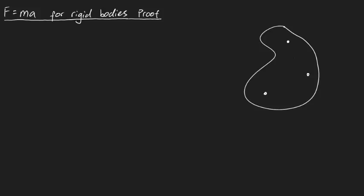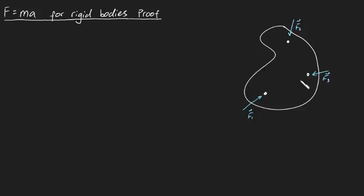Now I'm going to say that there are a couple of different forces acting on these particles. Let's say you've got F1 here, F2 here, and F3 here. So these three particles make up our rigid body, and in the general case there's a force acting on each of them.